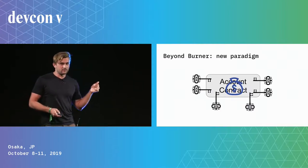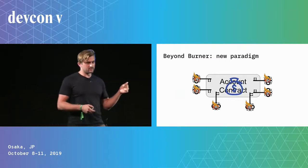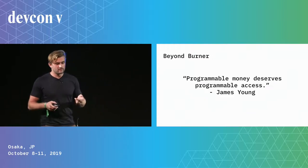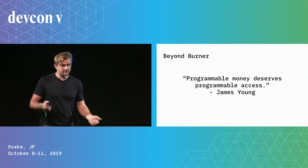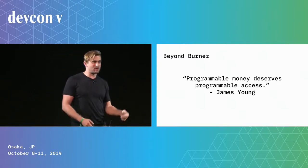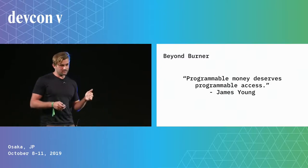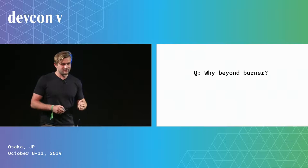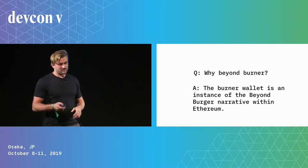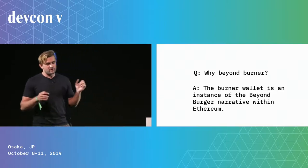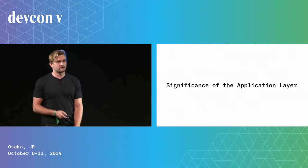All of those keys are potentially temporary — burner keys tied to a contract. This design has been pioneered by James Young. A quote from him: 'Programmable money deserves programmable access,' which I fully agree with. It's a pretty exciting new frontier to be developed. The burner wallet is an instance of the Beyond Burger narrative and its success within the Ethereum ecosystem.